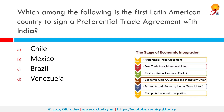Which among the following is the first Latin American country to sign a preferential trade agreement with India? That would be Chile. A preferential trade area is a trading bloc that gives preferential access to certain products from participating countries by reducing tariffs but not abolishing them completely. This can be established through a trade pact.